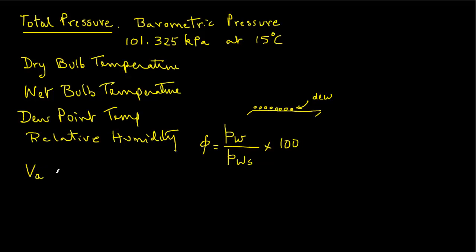Specific volume of dry air is obtained using ideal gas laws. V dash A, which is for dry air, equals RA, the gas constant for dry air, times T absolute divided by pressure of dry air PA. Specific volume of water vapor is obtained from the expression: V dash W, for water vapor, equals RW, the gas constant for water vapor, times TA, the absolute temperature, divided by Pw, partial pressure of water vapor.